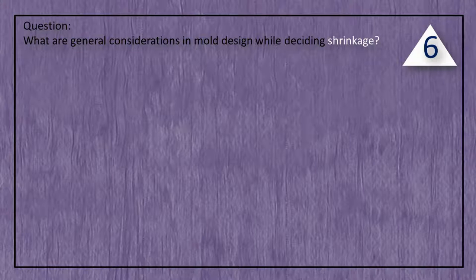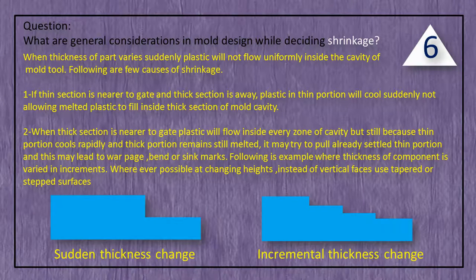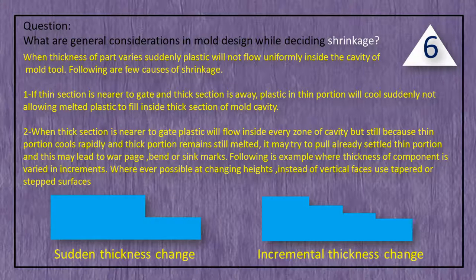Question: What are general considerations in mold design while deciding shrinkage? Answer: When the thickness of a part varies suddenly, plastic will not flow uniformly inside the cavity of the mold tool. Following are a few causes of shrinkage: if the thin section is nearer to the gate and the thick section is away, plastic in the thin portion will cool suddenly, not allowing melted plastic to fill inside the thick section of the mold cavity.